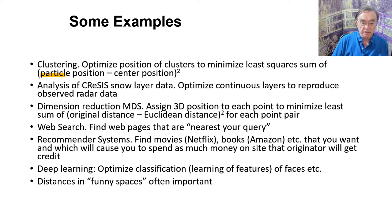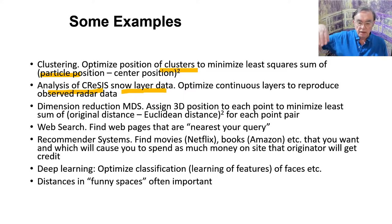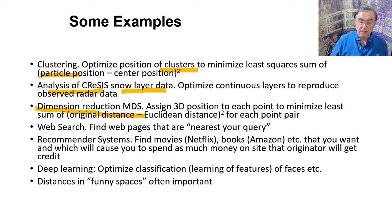Here we have some examples. We have clustering, where we're optimizing the position of cluster centers to minimize the least-square sum of particle position minus center position squared. Working with colleagues on snow layer data, we have to find layers which produce the observed radar data. In dimension reduction — multi-dimensional scaling — we assign a 3D position to each point to minimize another least-square sum of the original distance minus the Euclidean distance, squared for every point pair.